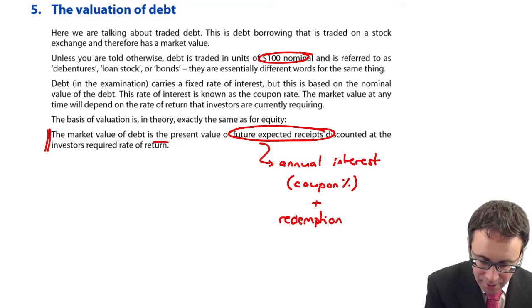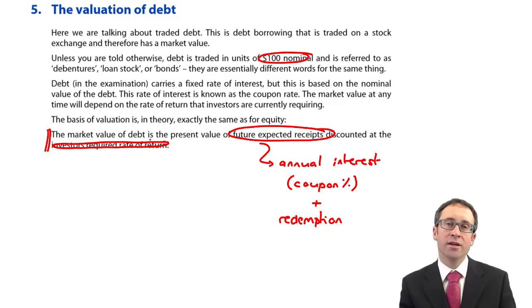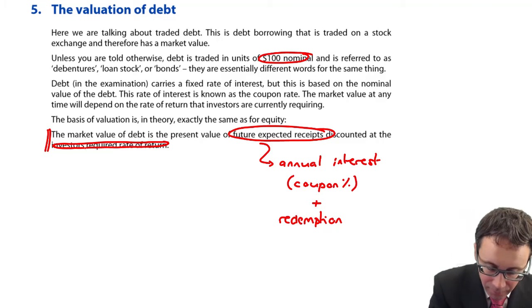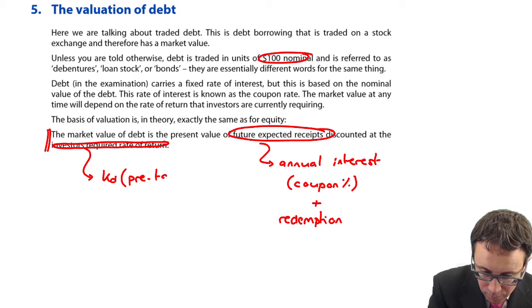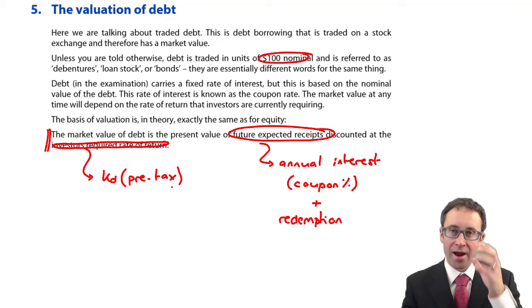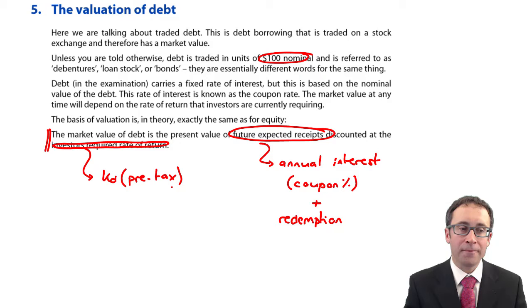When you're doing the discounting, that's at the investor's required rate of return. So effectively that is KD, the cost of debt, but just be careful. As we're looking at the market value for the debt holders, we're looking at everything pre-tax.